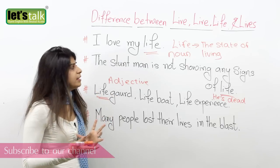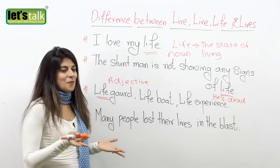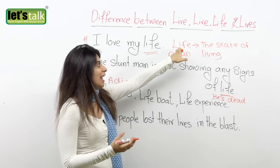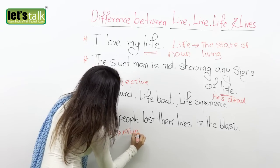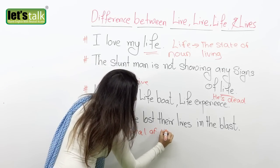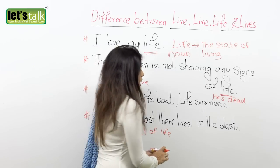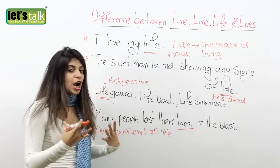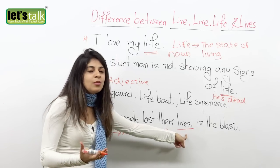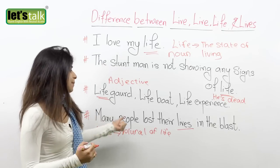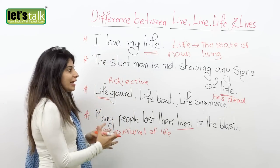Now the word 'lives' — it is the plural form of 'life.' For example: 'Many people lost their lives in the blast.' Because we are talking about many people, we use 'lives,' the plural of 'life.' We would not say 'many people lost their life in the blast' — it must be 'lives.'